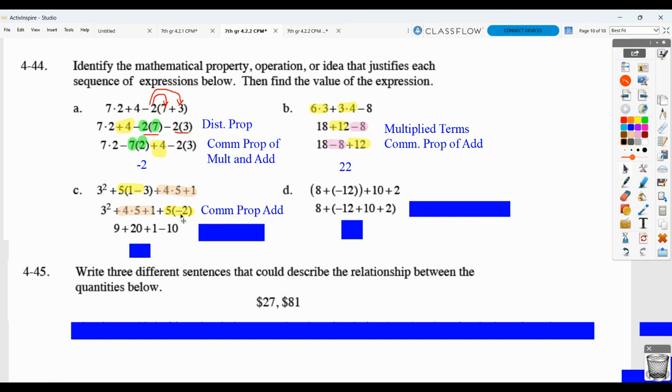Then, what did they do to go from this line to this line? Three to the second power is nine. Four times five is twenty, plus one. Five times negative two is plus a negative ten or minus ten. And that's just multiplying those terms. Nine plus twenty is twenty-nine. Plus one is thirty. Minus ten is twenty.